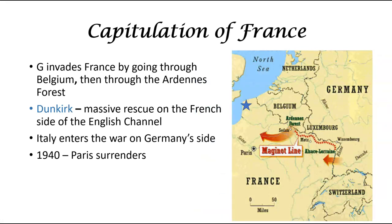However, Germany does the exact thing France thought it wouldn't, and goes through Belgium through the Ardennes Forest, basically walking around the Maginot Line. It pushes the French troops all the way up to Dunkirk — which is a great movie — one of the largest evacuation sites, a massive rescue by the English. They basically say anyone with a boat, please come pick up soldiers. Hitler gives the British 24 hours, and when he wakes up 24 hours later, he finds out that there are no soldiers left on the beaches of France.